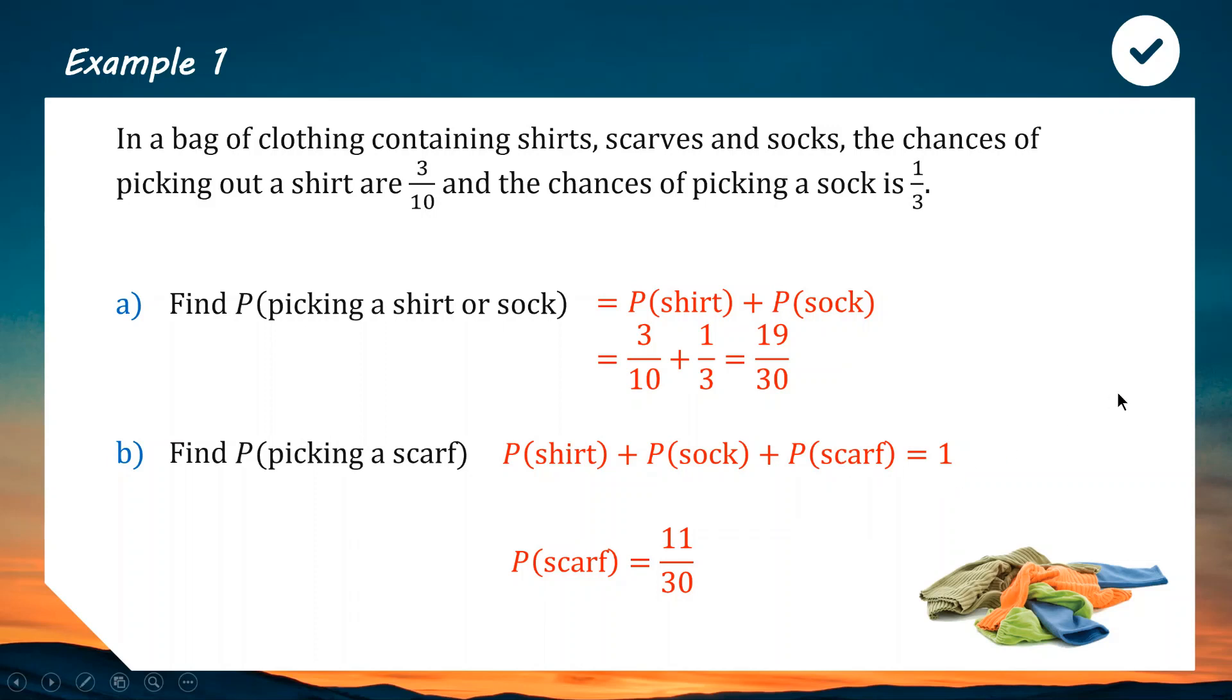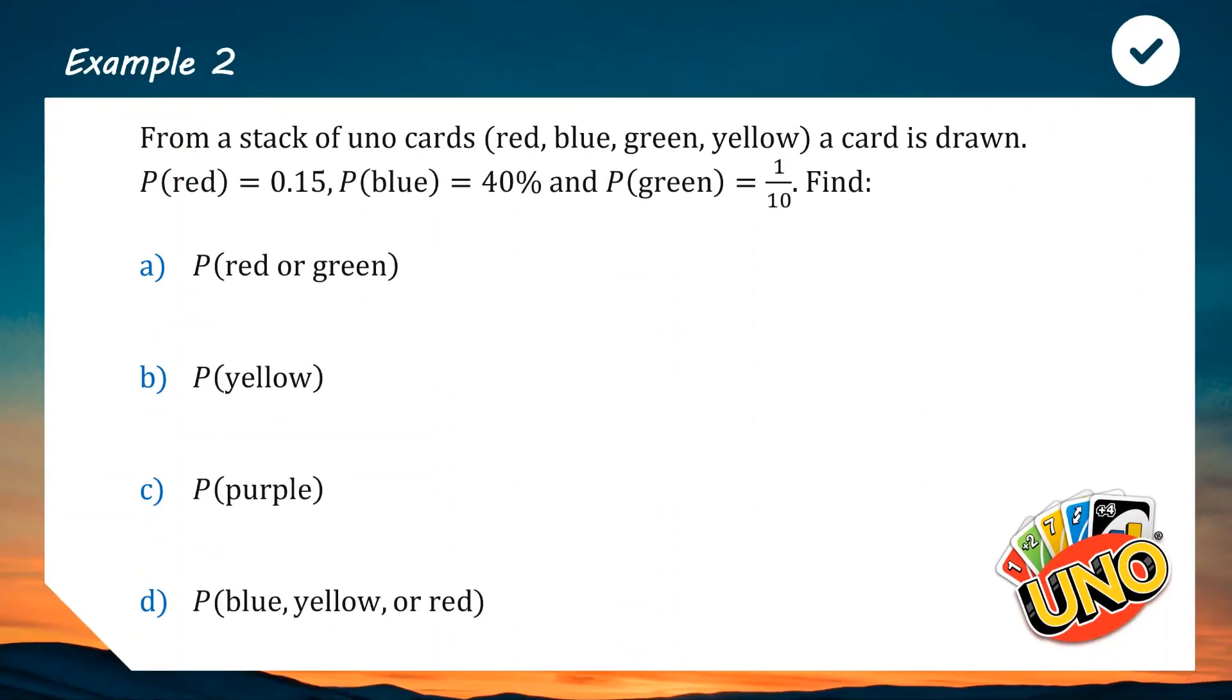If there's any questions about that, please let me know because some people do find that a bit confusing at first. But if that makes sense, we can try another one. This one, we have a stack of UNO cards, which of course are always red, blue, green, or yellow. We're ignoring the wild cards for now. A card is drawn at random. The probability of red is 0.15 or 15%, probability of blue is 40%, and probability of green is 1 out of 10, which would be 10%.